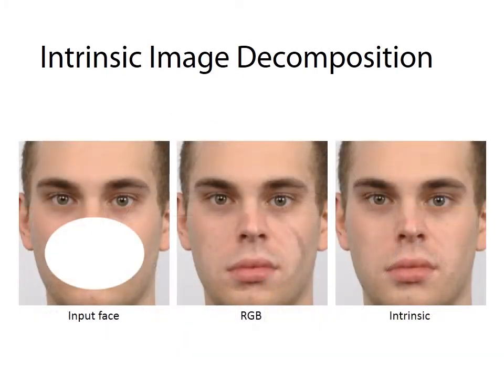Here shows a comparison between running our approach directly on the RGB image and separately on the intrinsic images. Running our approach on intrinsic images gives a better result — the skin tone of the inpainted region matches more closely with that of the available region, and there are fewer artifacts near the boundary of the inpainted region.